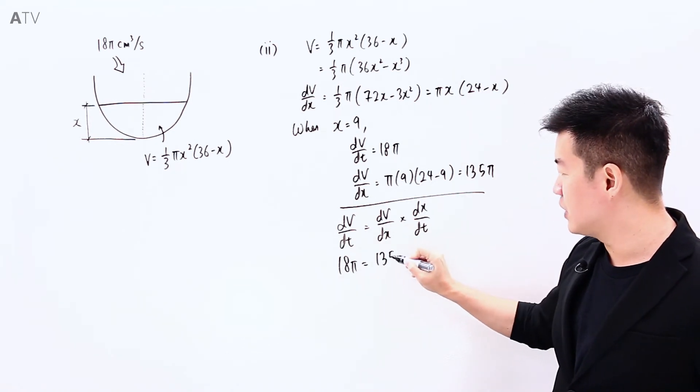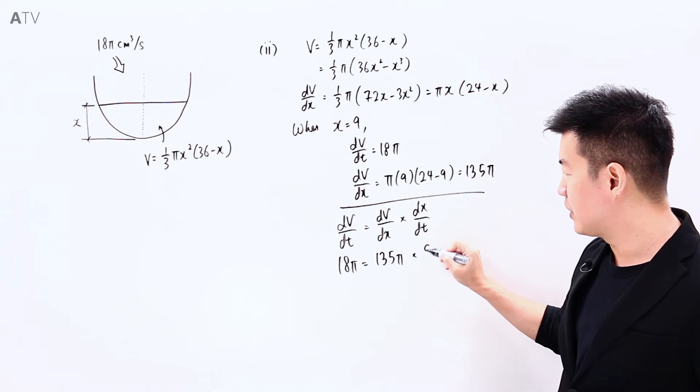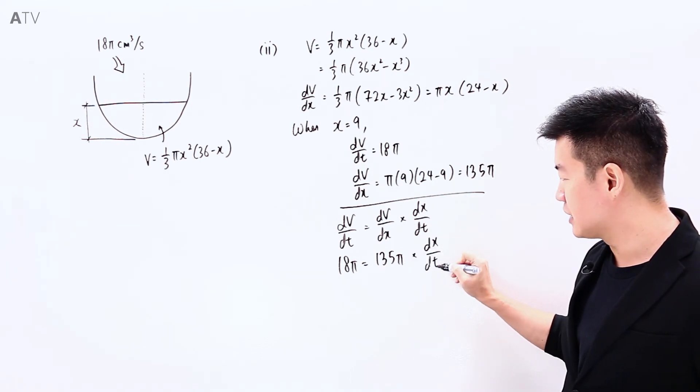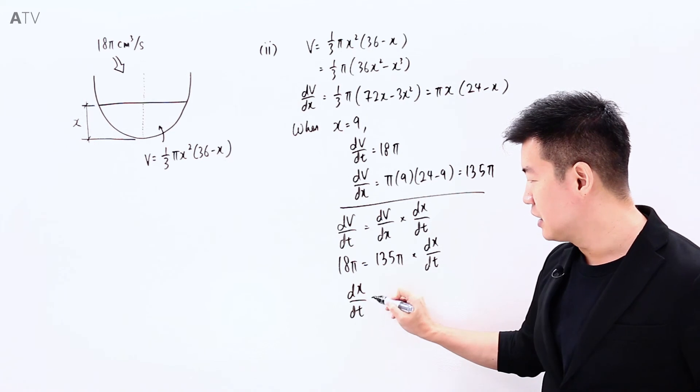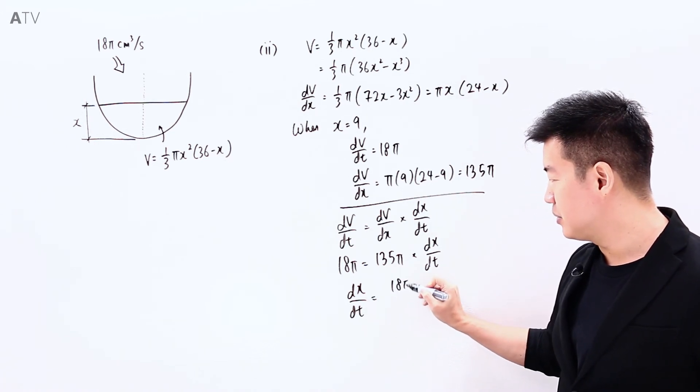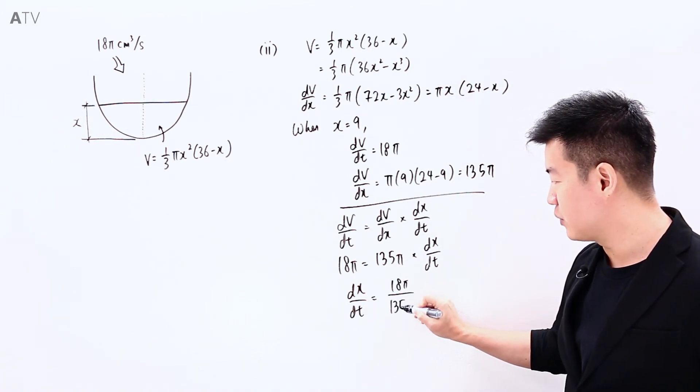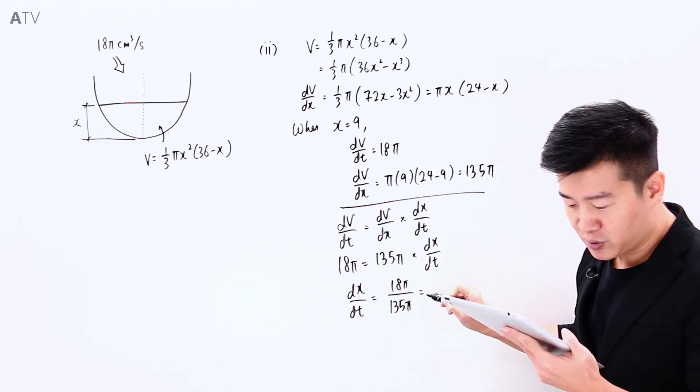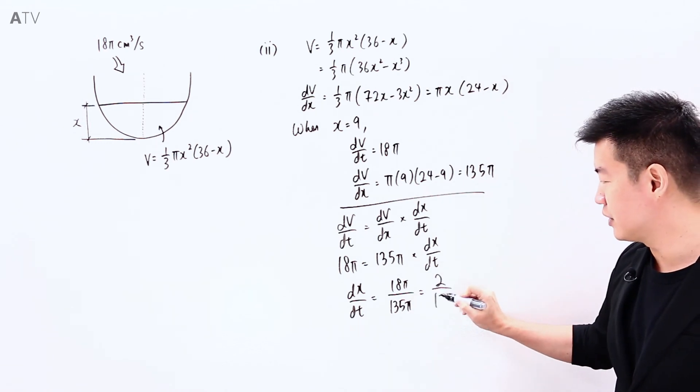...is 135π, then multiply by dx/dt. Which means that dx/dt is going to be equal to 18π divided by 135π, which will be 2/15.